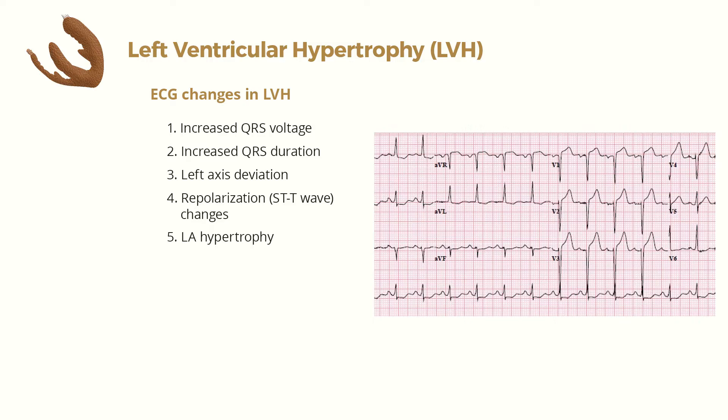The ECG diagnosis of LVH is quite reliable when very prominent voltage is seen in conjunction with left atrial and ST-T wave abnormalities, leftward deviated cardiac axis, or widening of the QRS. Generally, however, only some of the many ECG findings will be present. Several different ECG criteria for the diagnosis of LVH have been developed, all with their advantages and disadvantages — none are ideal. The most commonly used is the Sokoloff-Lyon criterion. We have a separate video on ECG criteria of LVH, the link of which is given in the description below.